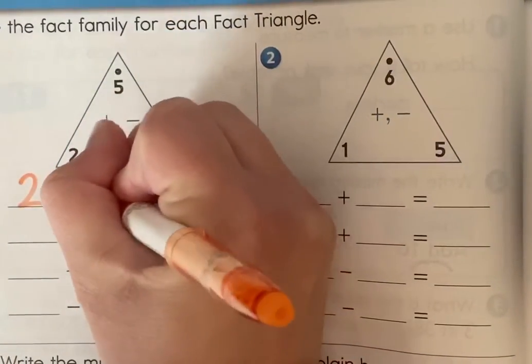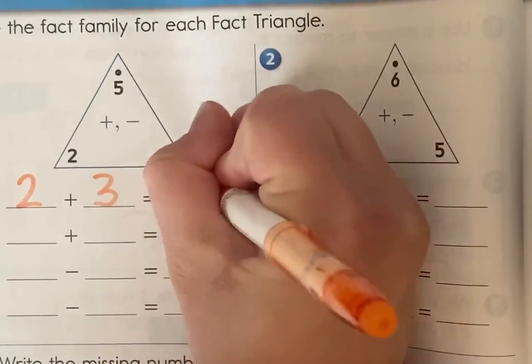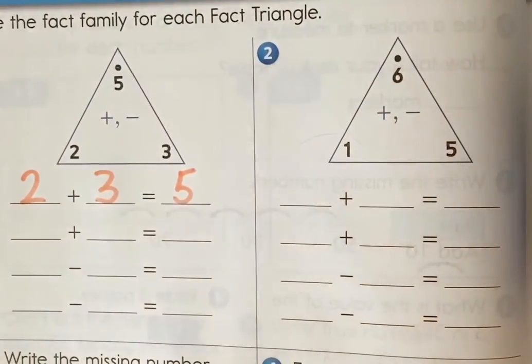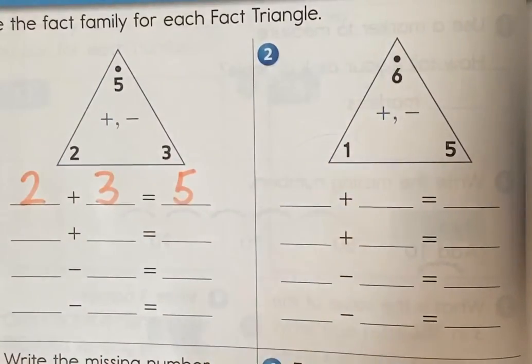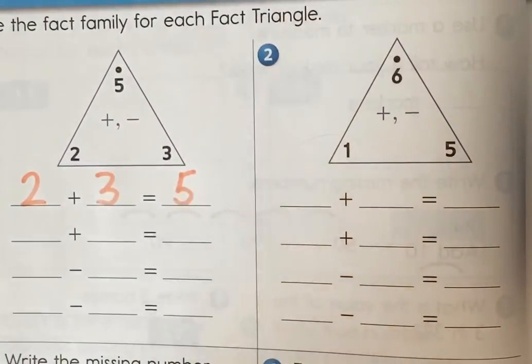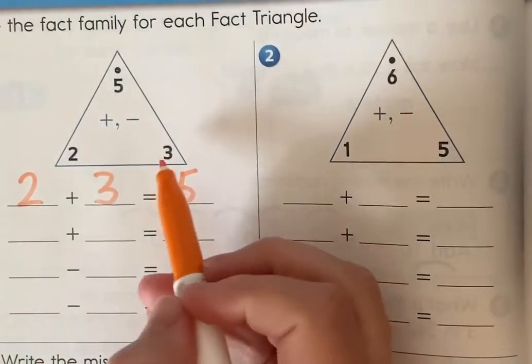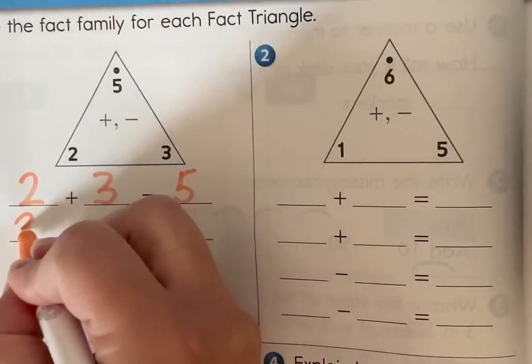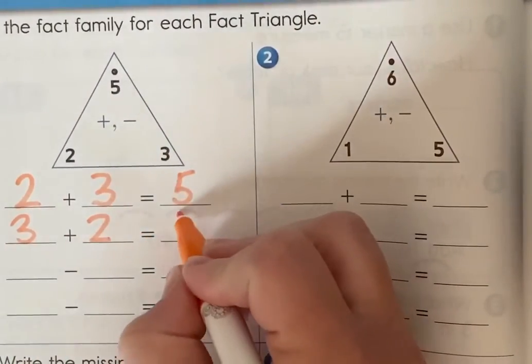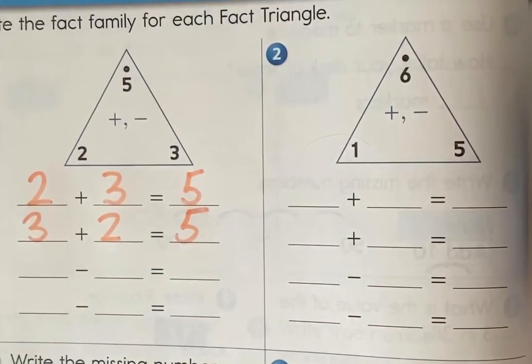So two plus three equals our sum or our biggest number up at the top. Then underneath we do the turnaround fact, which is when we switch the two add-ons or we switch those two numbers. Three plus two also equals five up at the top.